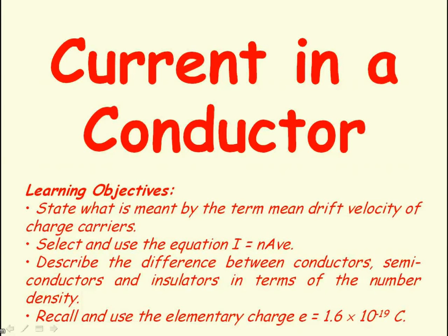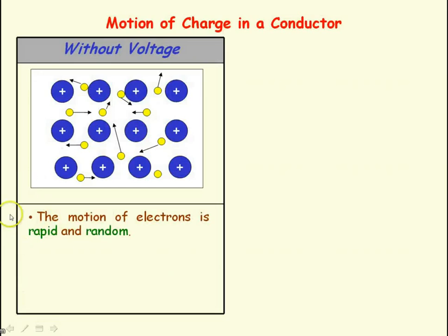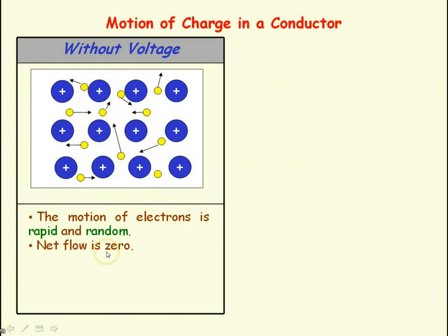Today we're going to look at the current in a conductor. We're first going to consider the motion of electrons in a conductor when there's no voltage, no potential difference across the conductor. The motion of electrons is rapid — they're moving very fast — but they're moving randomly in all different directions. Because of this randomness, the net movement, the net flow of charge, is zero. As a result, there's no current.